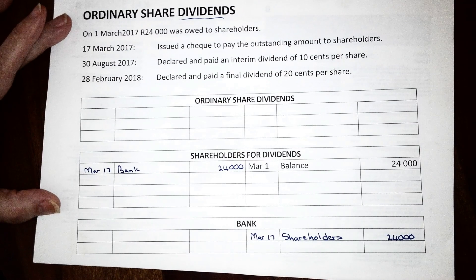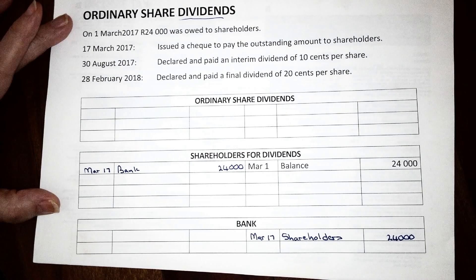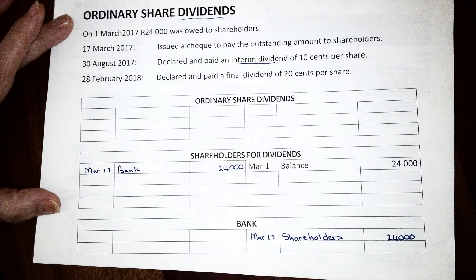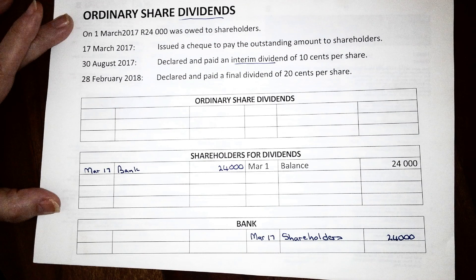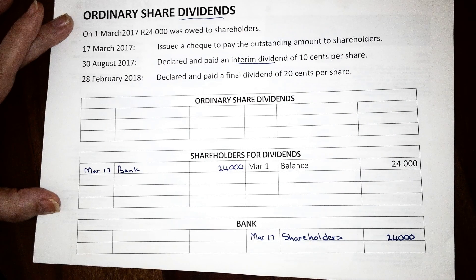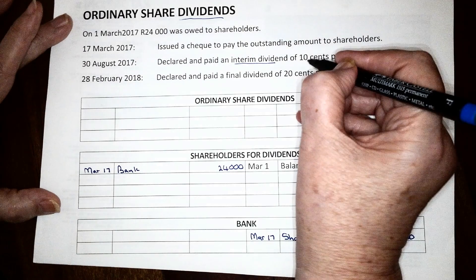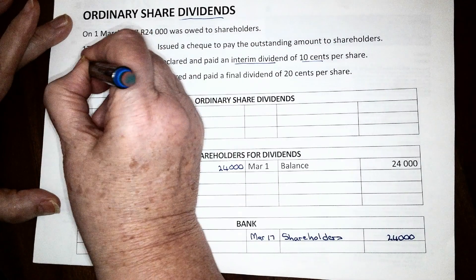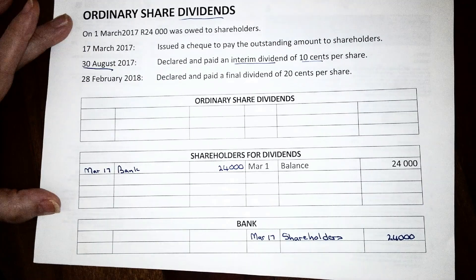On the 30th of August, the company declared and paid an interim dividend of 10 cents per share. An interim dividend is declared in the middle of the financial year because shareholders don't only want to receive money once a year. So in the middle of the year, a small income statement is prepared and we calculate more or less what the profit is, then we decide how much of the profits will be paid out to shareholders. The date on which the dividend is declared is the 30th of August.